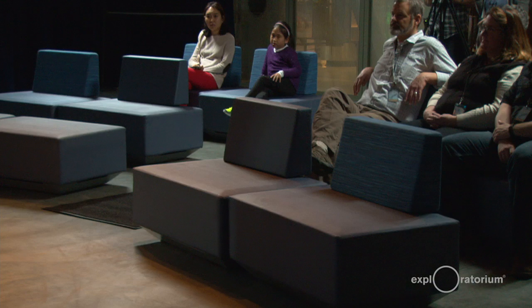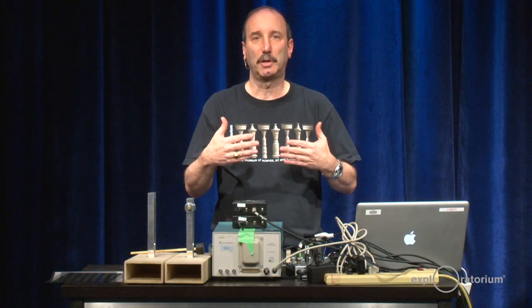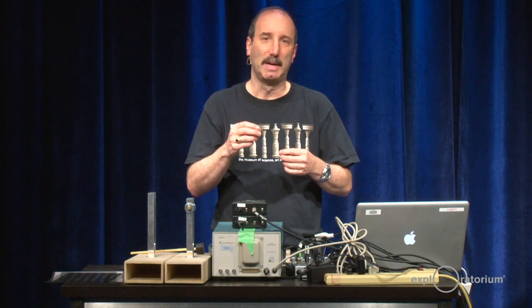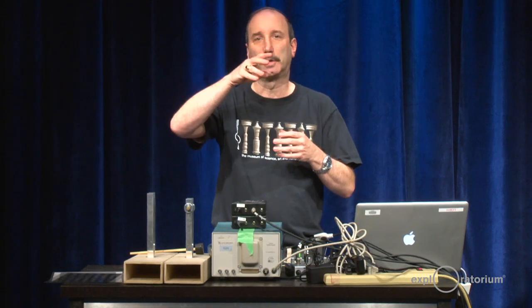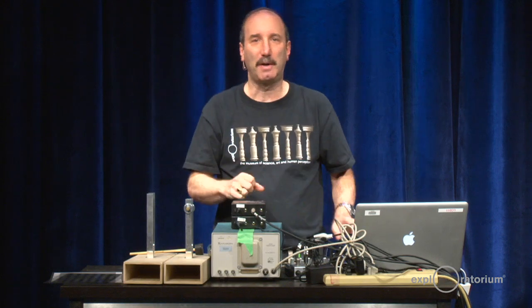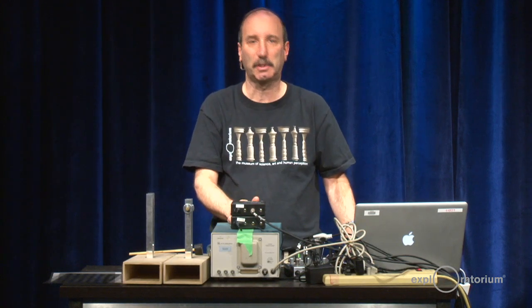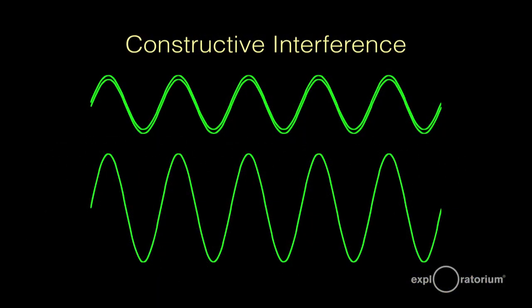Let's start by looking at constructive interference. Here I have two waves, and you'll notice they are lined up. The top part of the wave is called the crest and the valley part is called the trough. Here you can see they're lined up crest to crest and trough to trough. If I bring those two waves together and combine them — like two speakers — you'll get a wave that's twice as big as either of the two original waves, assuming they're both the same size.